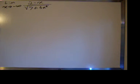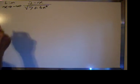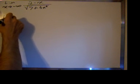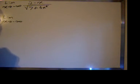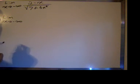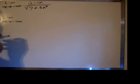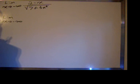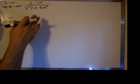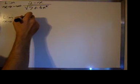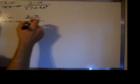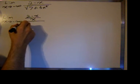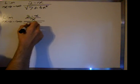The way we're going to evaluate this limit is to divide the whole expression — the numerator and the denominator — by the highest power of x in the denominator. The highest power of x in the denominator is the square root of x squared, which is x. So we'll divide the numerator by x and the denominator by x.